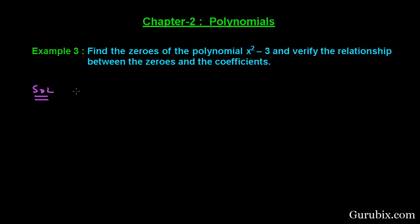First of all, we shall collect the given polynomial and denote it by p(x). The given polynomial is x squared minus 3. We have to write this polynomial in its standard form, which means we have to add a term 0x in it. So this is the standard form of the given polynomial.